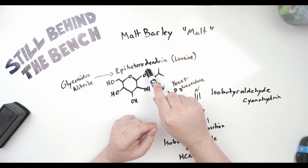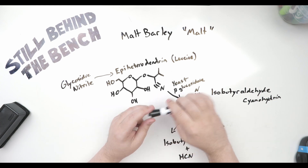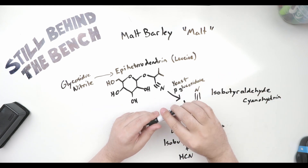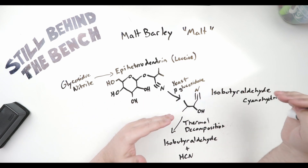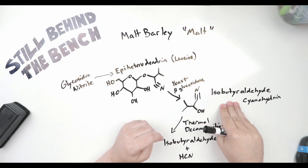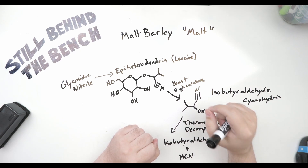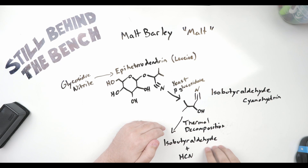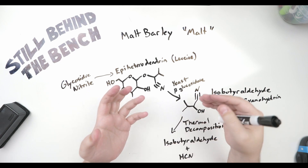After milling the malted grain, mashing, and starting fermentation, yeast releases a beta-glucosidase enzyme that breaks down epiheterodendrin, splitting it into a glucose molecule and isobuteraldehyde cyanohydrin. That compound ends up in your fermented wash. When you distill, it undergoes thermal decomposition, splitting into isobuteraldehyde and hydrogen cyanide. In the presence of heat, water, oxygen, and copper as a catalyst, that hydrogen cyanide reacts with the ethanol produced by yeast and gets turned into ethyl carbamate.